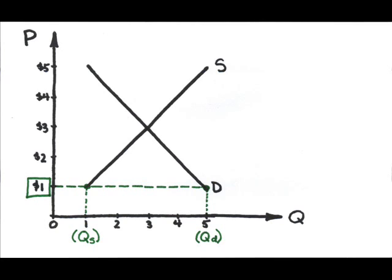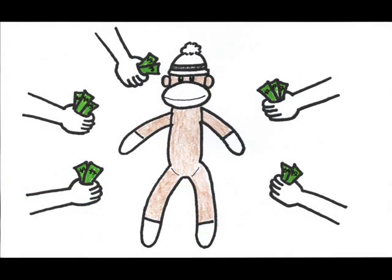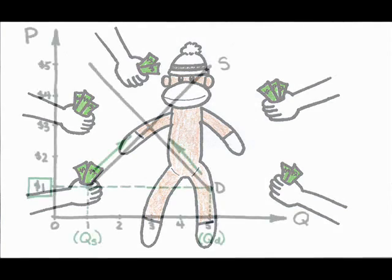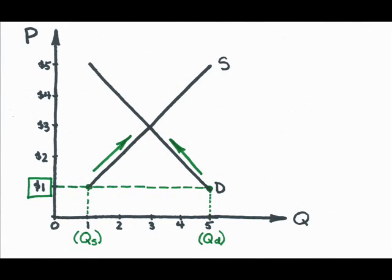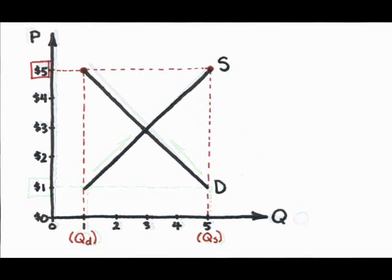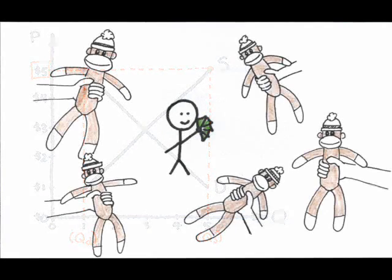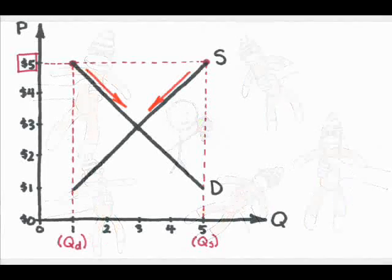A shortage will result in upward pressure on price. Why? Well, those buyers all want to purchase but there's only 1 unit available, so the buyers start to compete to get that 1 available unit by offering more money. Price goes up, and consequently quantity demanded drops and quantity supplied rises, until we get to equilibrium. What about a higher price, like $5? At $5, sellers are happy providing 5 units, but buyers are unhappy — they only want 1 unit. When the quantity demanded is less than the quantity supplied, we have a surplus, and price will drop.